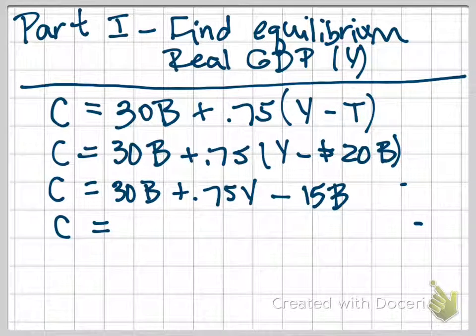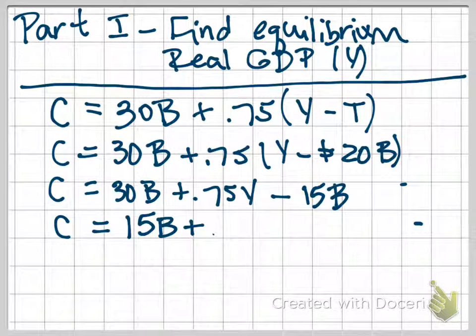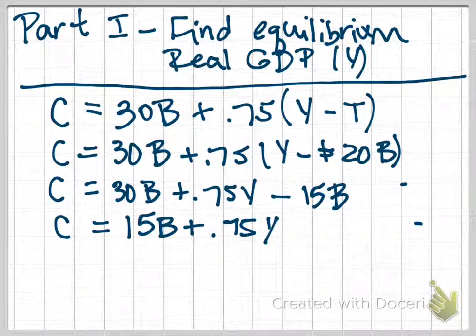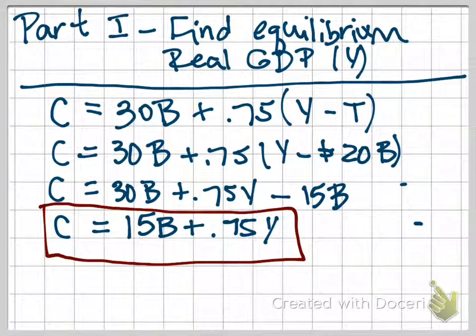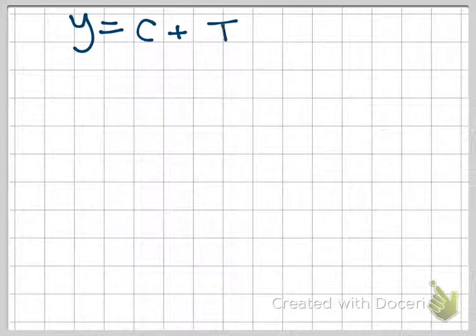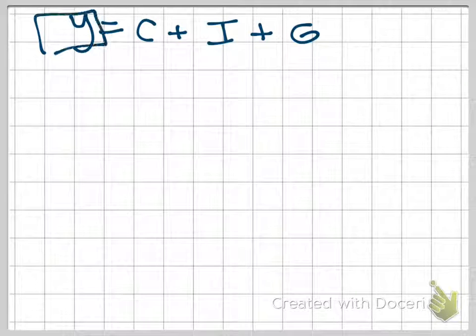So we have $30 billion plus 0.75Y minus, and you're going to take that $20 billion and multiply by 0.75 to give you a value of $15 billion. Now we can combine those. C now equals $30 billion minus $15 or just $15 billion plus 0.75Y. So that's our consumption; we've reduced it down in the most simple way that we can. Now we're going to take this value for C and substitute it into our real GDP equation and solve for Y.